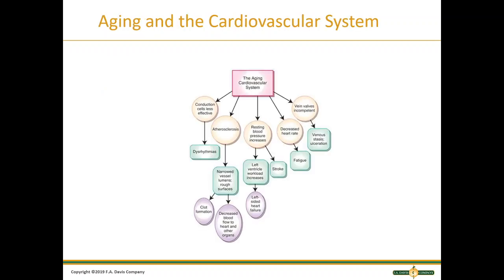Here is a concept map showing how the process of aging affects our cardiovascular system. The regulation depends greatly upon lifestyle and genetics. Atherosclerosis is a major reason cardiovascular disease is the leading killer in the United States — narrowing of vessels leads to decreased blood flow, which is a large portion of what happens in cardiovascular disease.